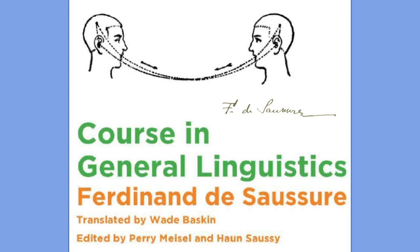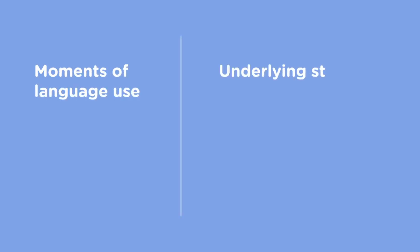One of the most important contributions of Saussure was the distinction he made between the actual moments of language use and the underlying structures of the system that allows the actualization of these moments. He referred to the former as parole or speech and the latter as langue or language. In his words, parole refers to the concrete utterances or speech which is individual specific.